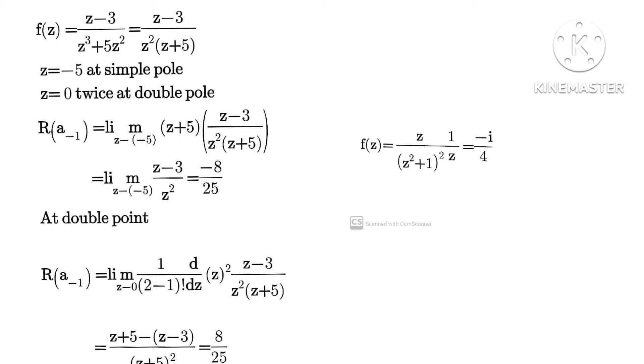our z equals to 0 twice as at the double pole, and z equals to minus 5 at the simple pole. Then our residue: apply our residue formula. Then we have (z minus 3) over z squared. That's putting z...